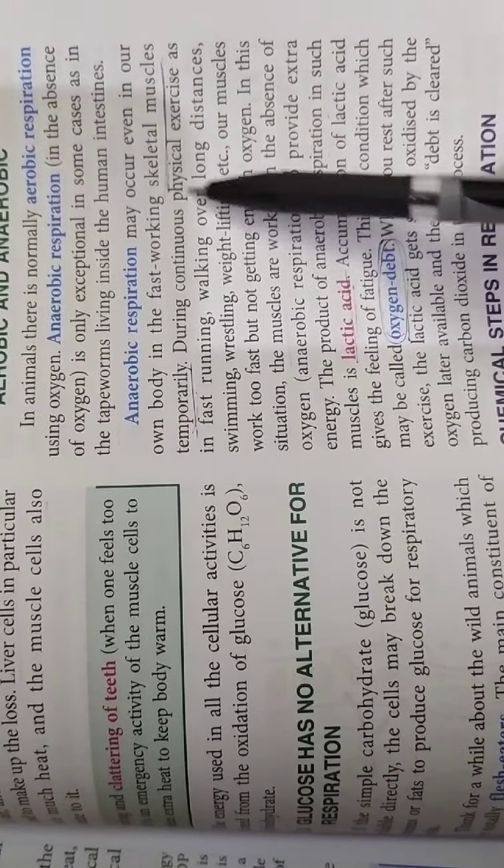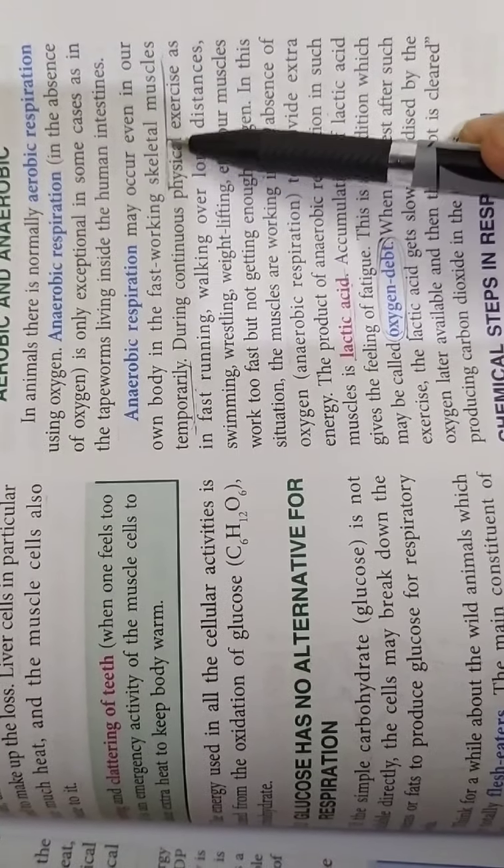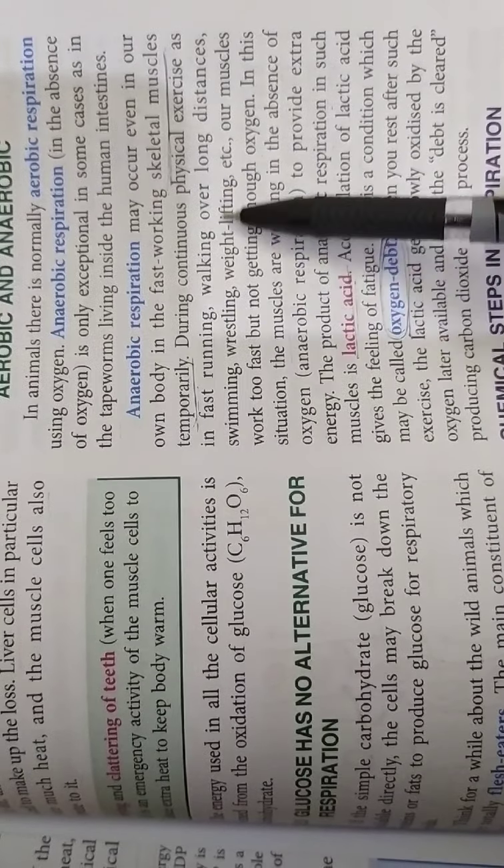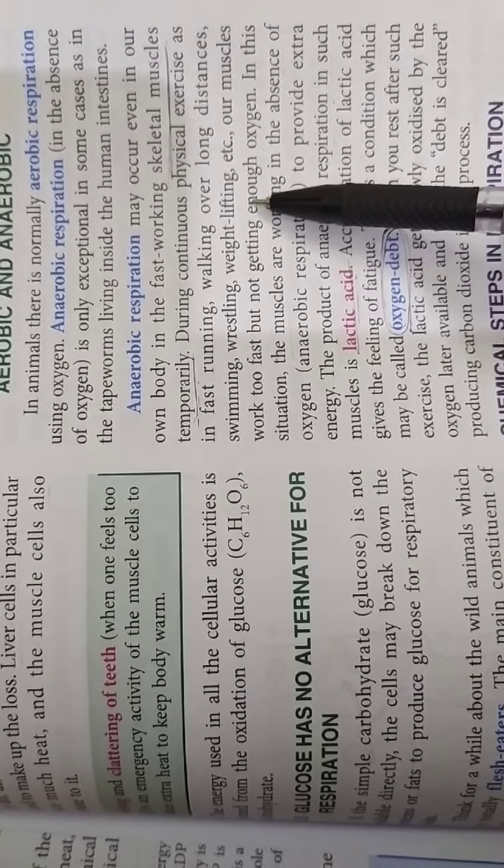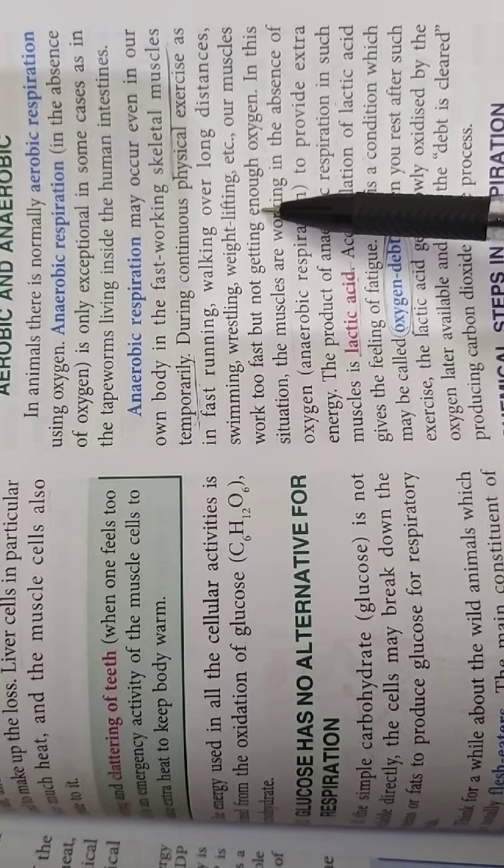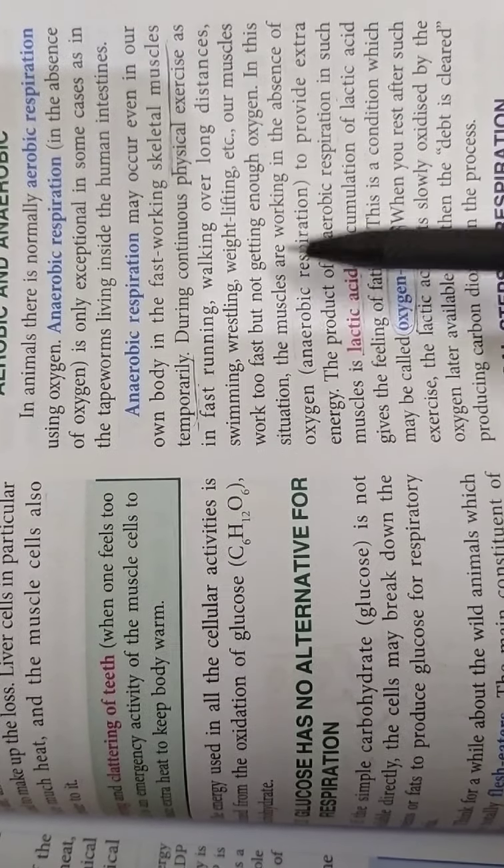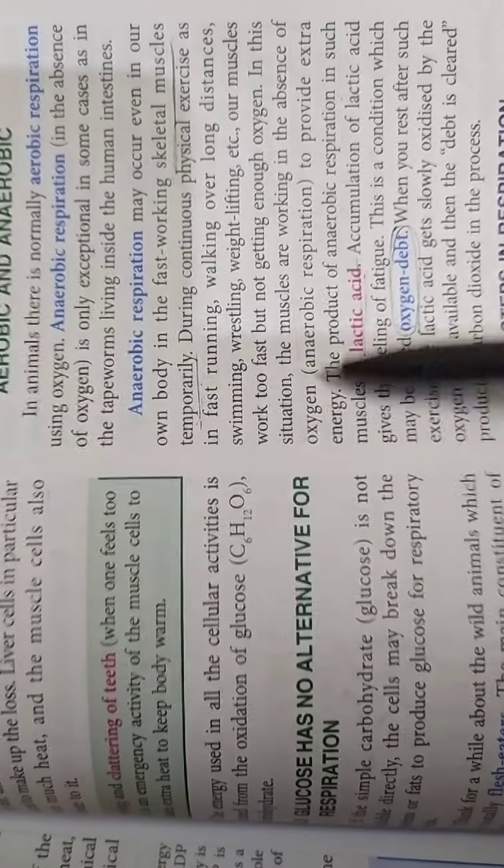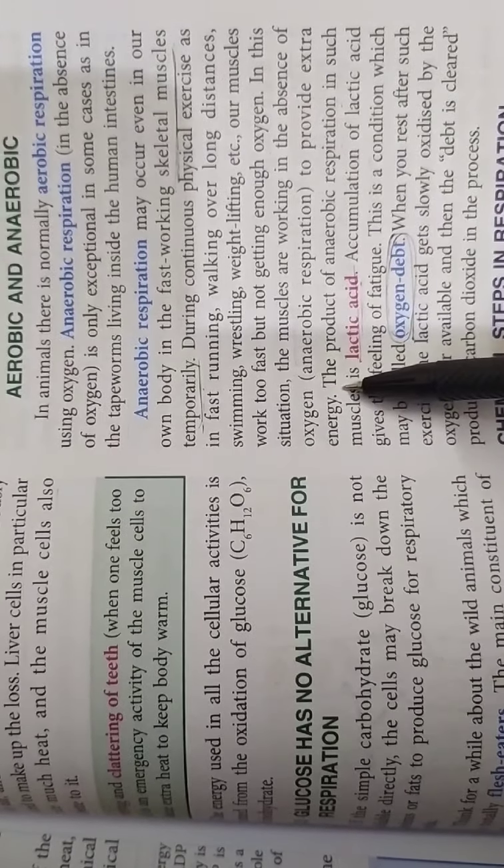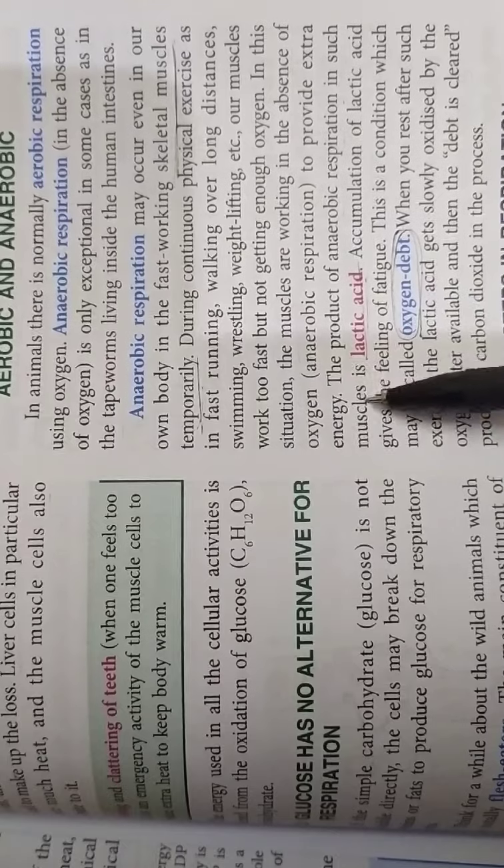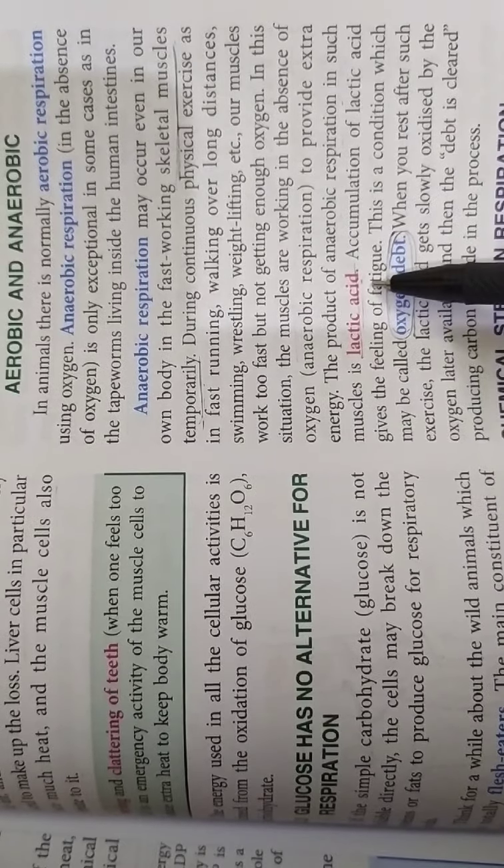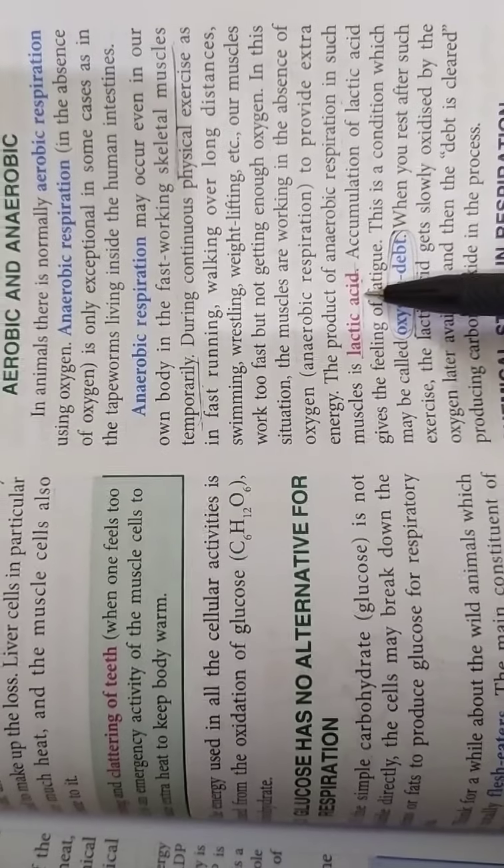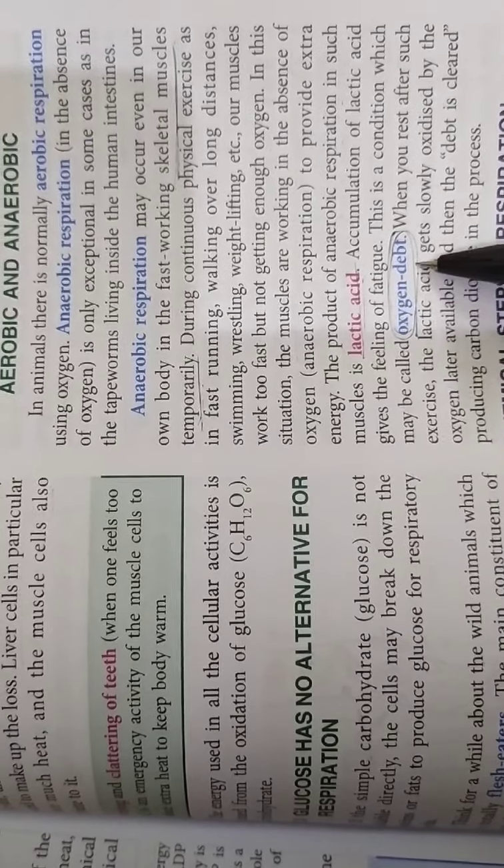Here is information about anaerobic respiration. It can occur in body during fast working skeletal muscles, especially running, walking, swimming, wrestling, weight lifting, etc. When oxygen is not available, in such situation, muscles start working in the absence of oxygen and they provide extra energy. This anaerobic respiration is producing lactic acid. This lactic acid which is produced during the absence of oxygen is also known as oxygen debt.